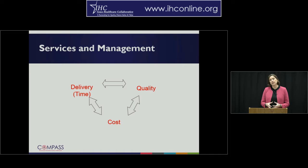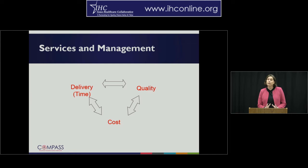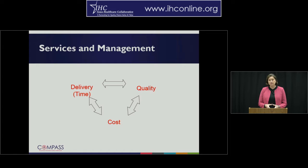Within a lean organization, there are three things we are often brought to the table with when it comes to improving: delivery — the time it takes to deliver services or products; quality — the quality in which we provide those services; and cost. Lean takes all three elements and considers them together. Think of this as a three-legged stool — it's a balanced approach. When we take a balanced approach, we have the opportunity to increase our services and management effectiveness throughout the organization.